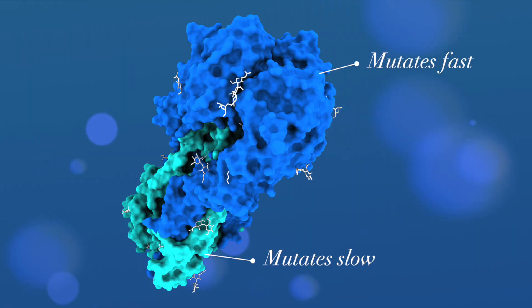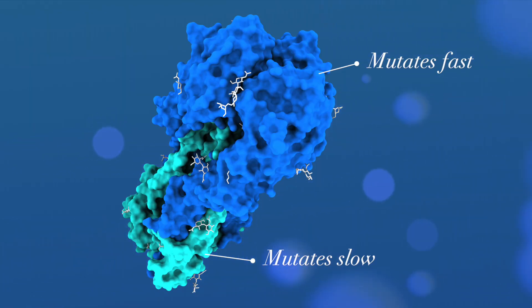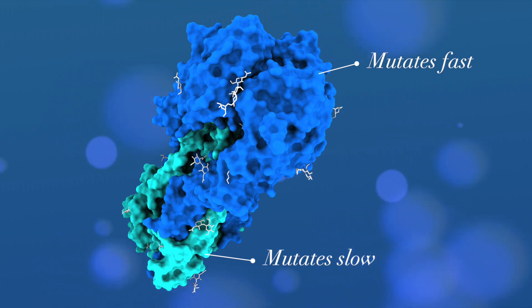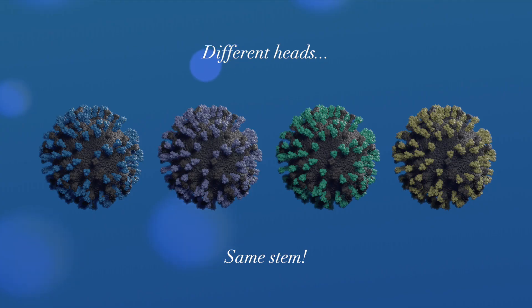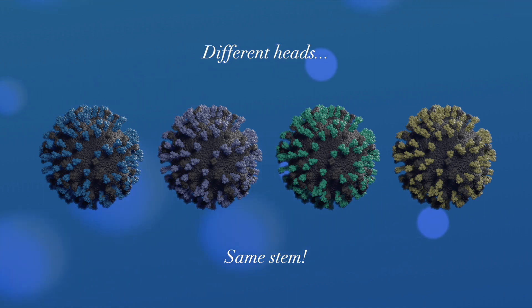A protein drug that binds to the stem could prevent it from snapping open. Fortunately, the stem of hemagglutinin also mutates at a much lower rate than the head. That means that if we had a protein that binds to the stem, we could use it against influenza year after year, even while the head is mutating.